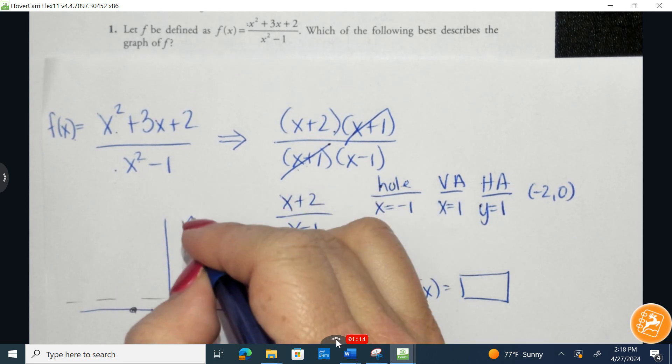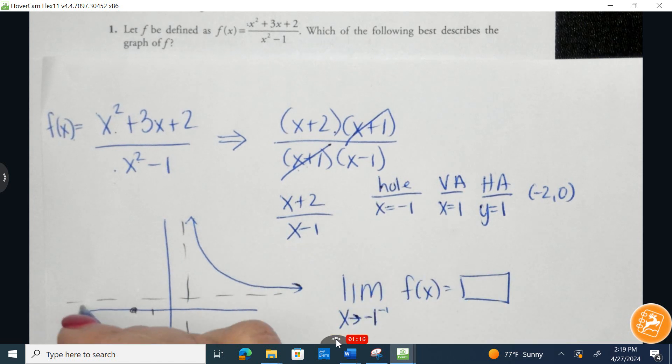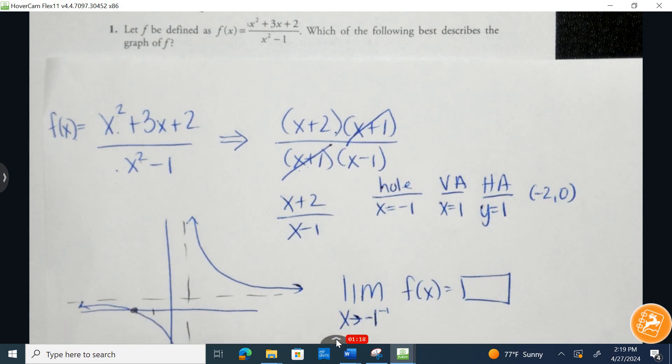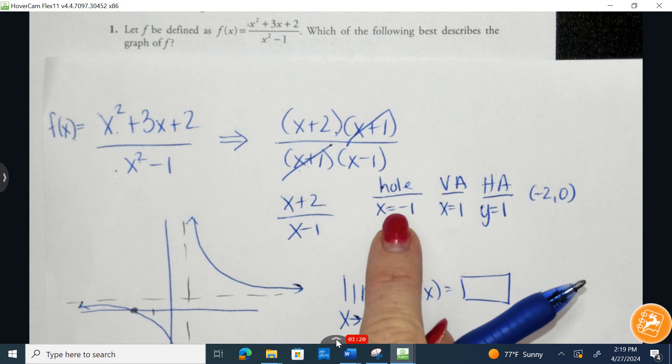And that tells me then that this rational function is going to look something like this. But don't forget, we have forgot about the hole in the graph.